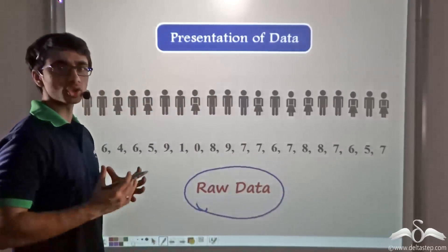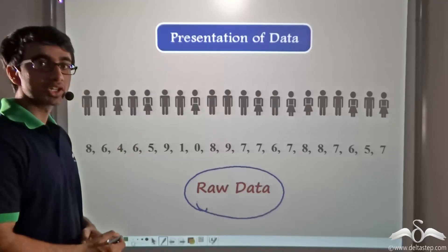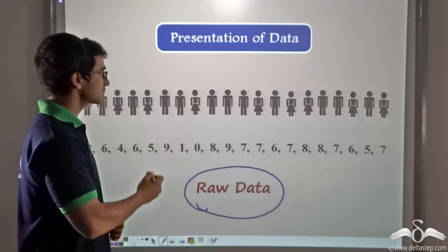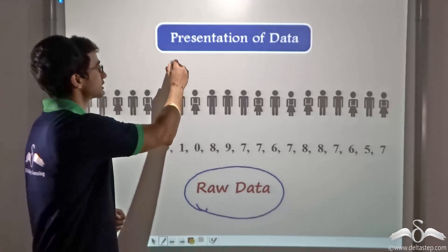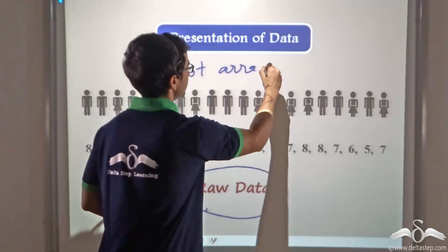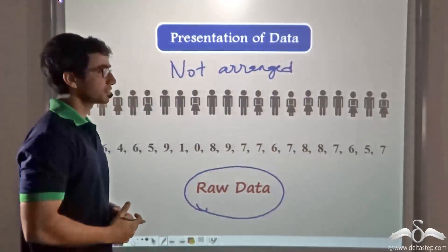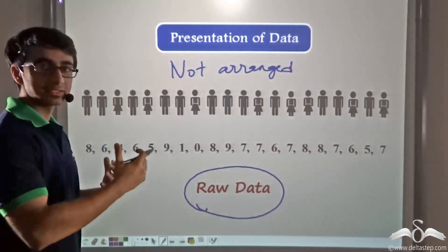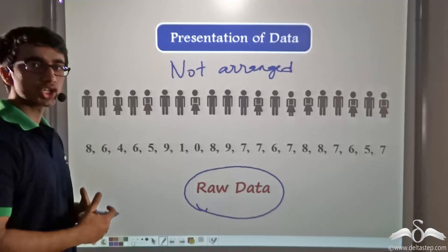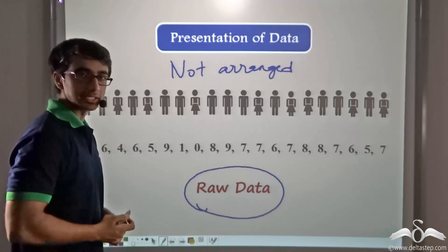Why is it called raw data? It is called raw data because the marks have not been arranged in any particular format. Since it is randomly ordered and not in ascending or descending order, it is known as raw data.